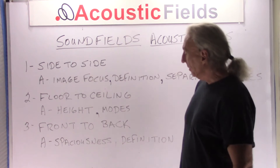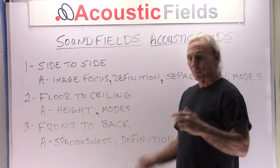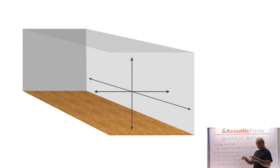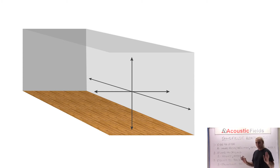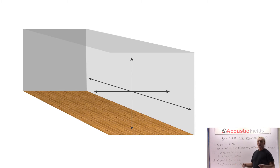Our third sound field is front to back. We have energy moving from the front of the room to the back of the room. So we have side to side, floor to ceiling, and front to back — three areas we have to look at. Spaciousness is a really big thing with front-to-back imaging. If you take a series of diffusers or absorbers and move them closer to the listening chair from the rear wall, you'll immediately sense that spaciousness because you're making the room physically smaller, changing all the reflections, changing all the time signatures on those reflections, and impacting the pressure distribution in those areas.